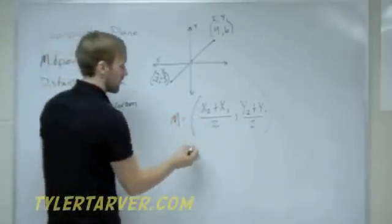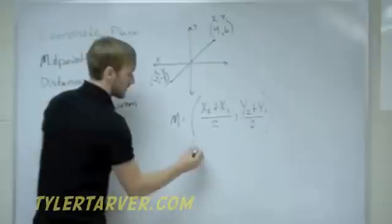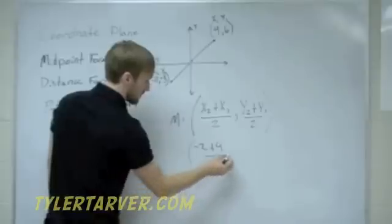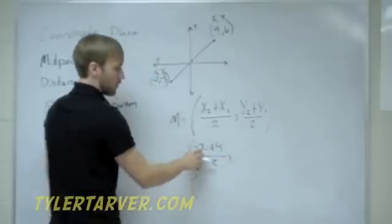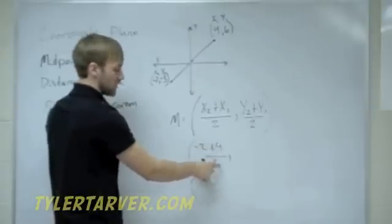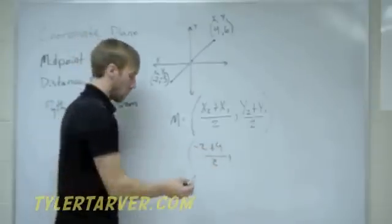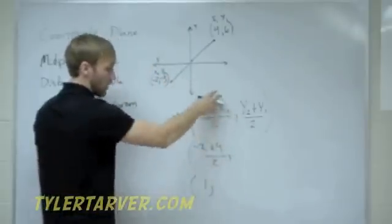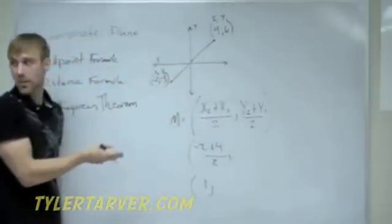We'll make this our X1 and our Y1, this will be our X2 and Y2. Now that we've labeled that, we've done the hard part. And it doesn't matter which one's 1 and 2, it just makes sure that 1 is one point, 2 is another point. So, we plug it in. Our X2 is negative 2, plus our X1 is 4, divided by 2. That gives us our X coordinate.